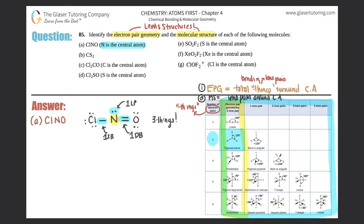Three total things means the electron pair geometry is trigonal planar. For molecular structure, we focus on lone pairs at the central atom. Nitrogen has one lone pair — so three total things and one lone pair gives us a bent or angular shape. Electron pair geometry: trigonal planar. Molecular structure: bent.